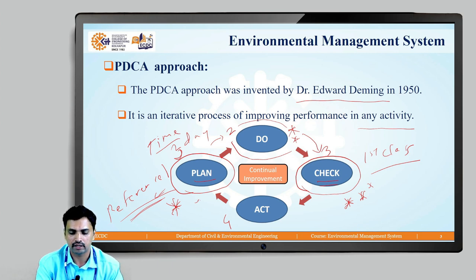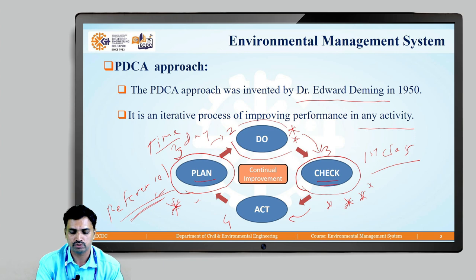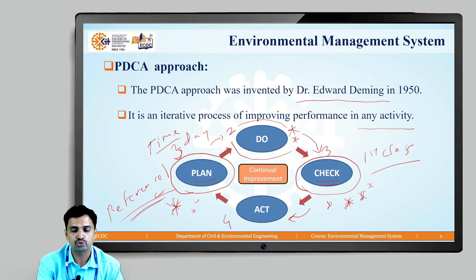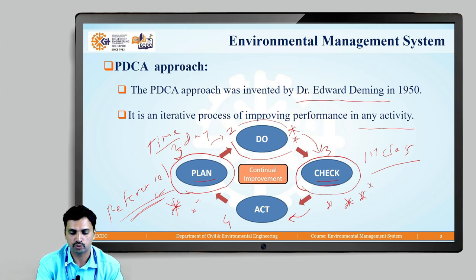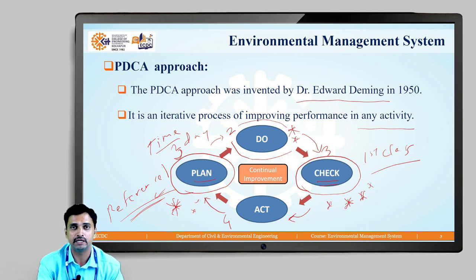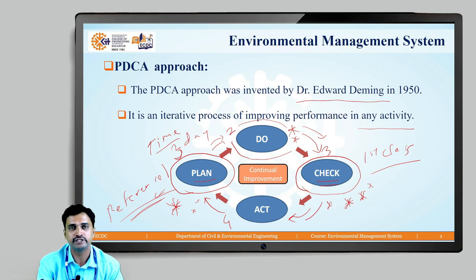Once we identify the root causes or the reasons for not achieving the required objective, those are worked out in the Act phase. Suppose you are appearing for a similar type of subject in the next semester — you can use this improved plan and try again to score first-class performance. In this way you are able to improve the performance. As we can see, it is a closed cycle: after the Act part it connects again with the planning. If the required performance is obtained, then we can think of other areas for improving performance in the system.